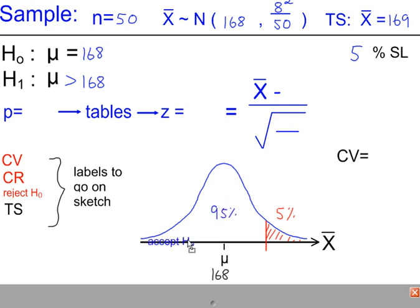This is the acceptance region, where we would accept H0. This is the rejection region, where we reject H0, called the critical region.